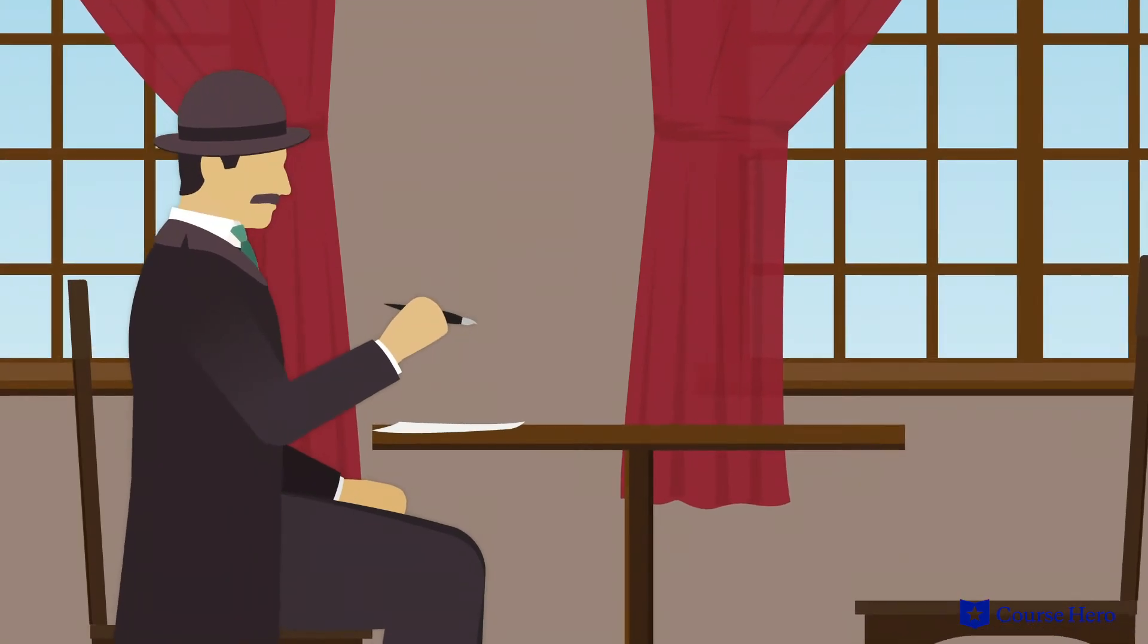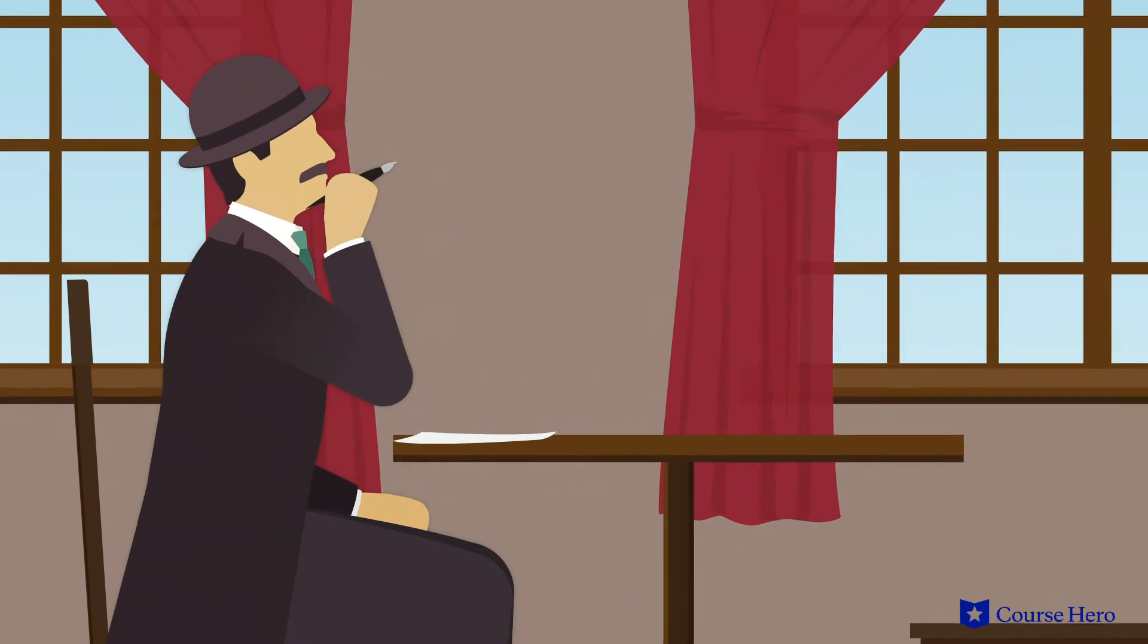What a coincidence! Bloom was just thinking about writing to Martha, and he decides to write her right there in the bar. He thinks about the fact that music can be reduced to mathematical relationships. If Molly can cheat, he can too.